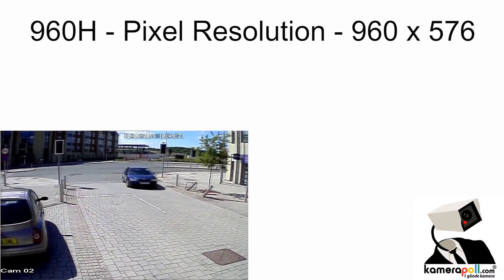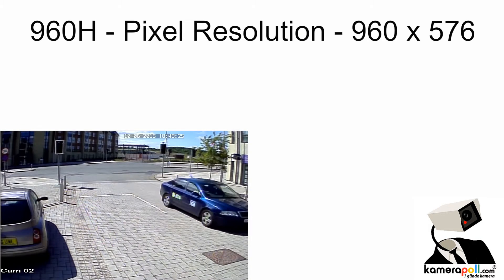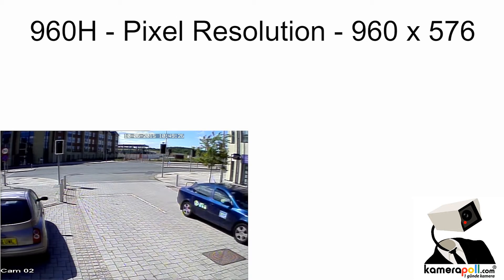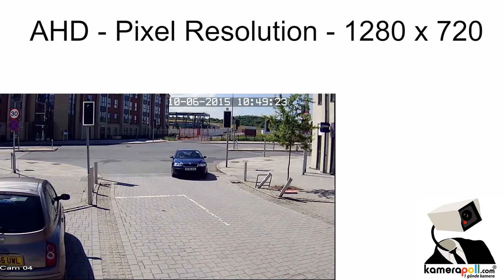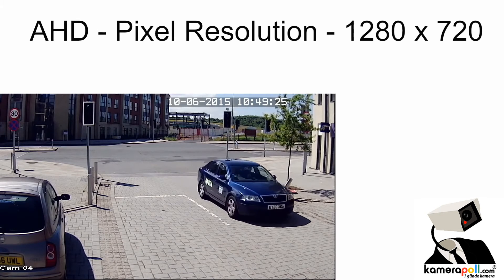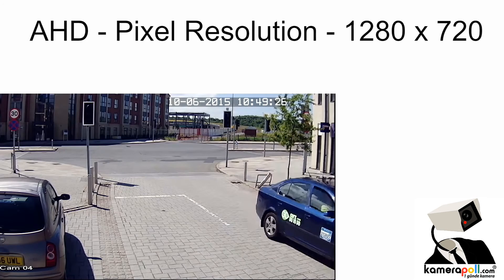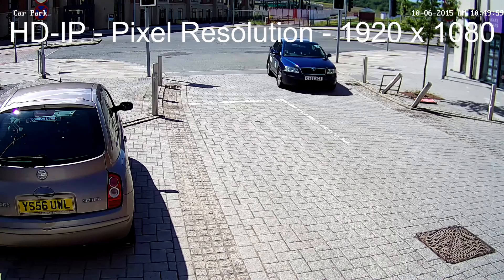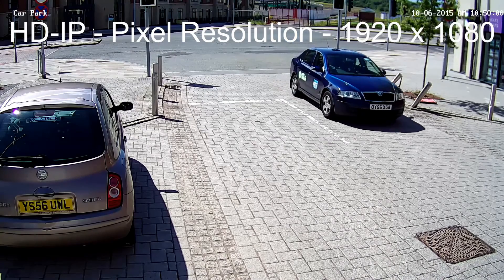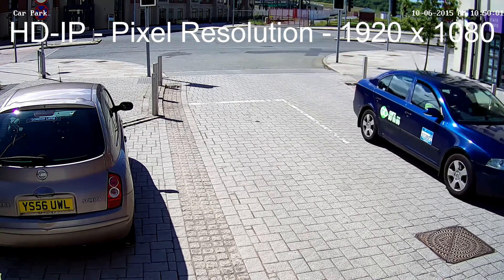Here we show the actual pixel resolution that each system records at. 960H is 960x576, which is a quarter of full HD resolution. AHD is 1280x720, which is less than half of full HD resolution. And finally, this is full HD resolution: 1920x1080 pixels.